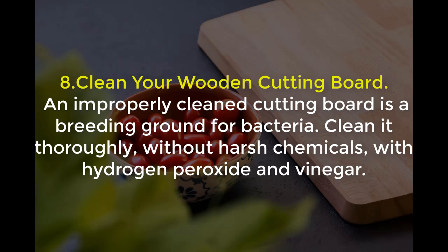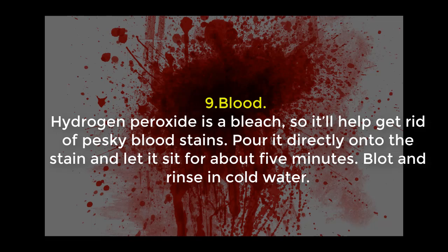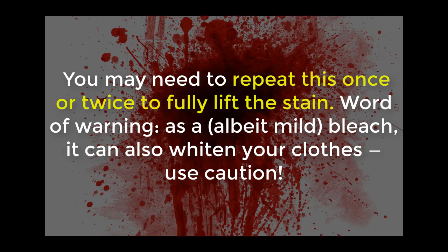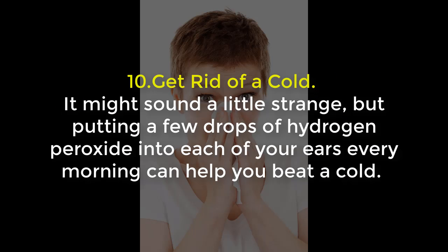Number nine: blood stains. Hydrogen peroxide is a bleach, so it helps get rid of pesky blood stains. Pour it directly onto the stain and let it sit for about five minutes, then rinse in cold water. You may need to repeat this once or twice to fully lift the stain. Word of warning: as a mild bleach, it can also whiten your clothes, so use caution.